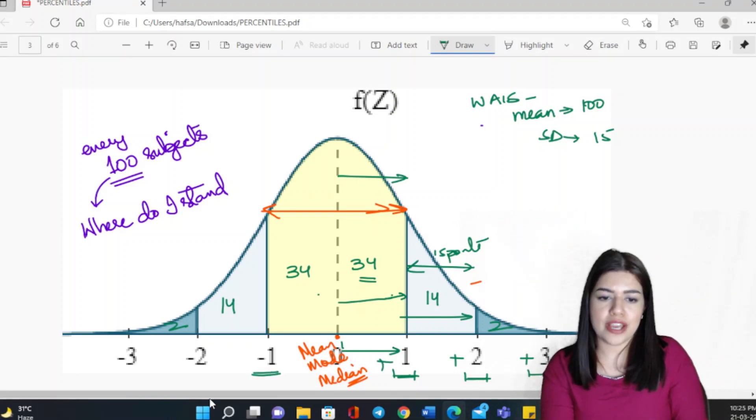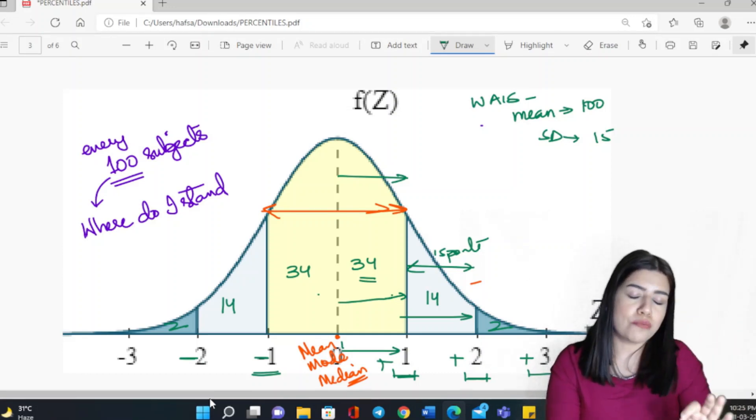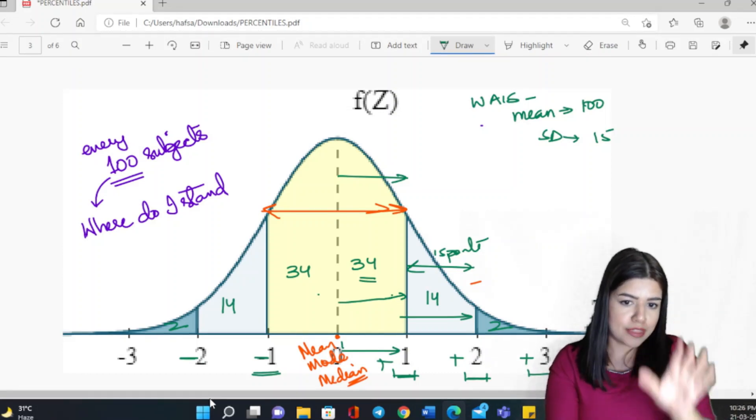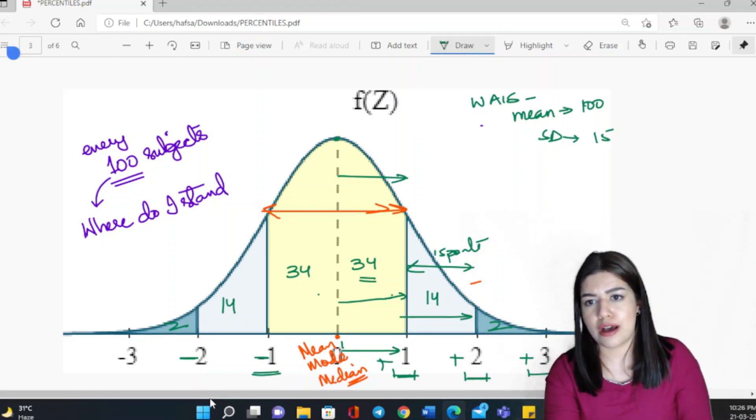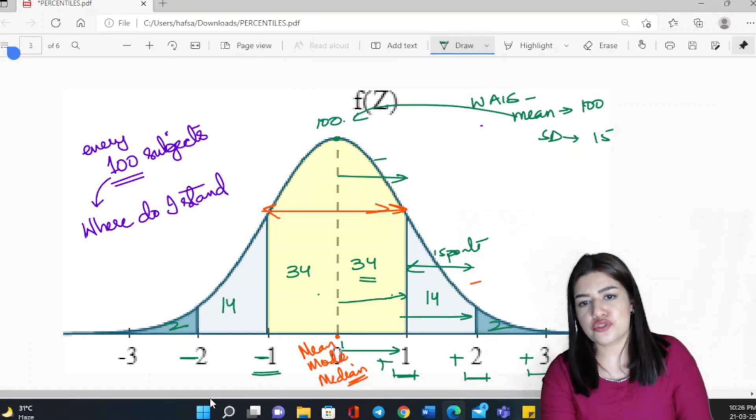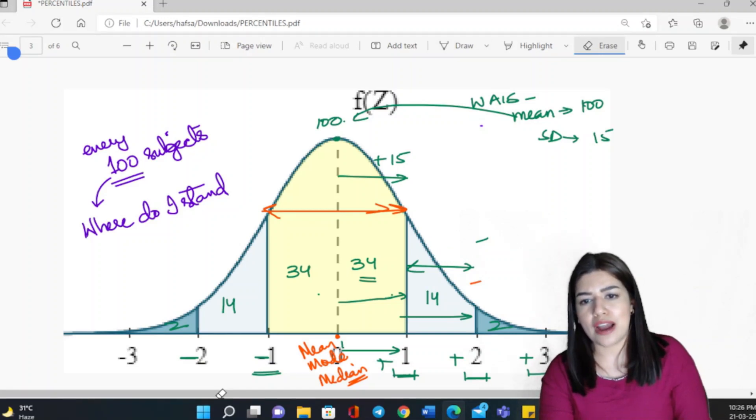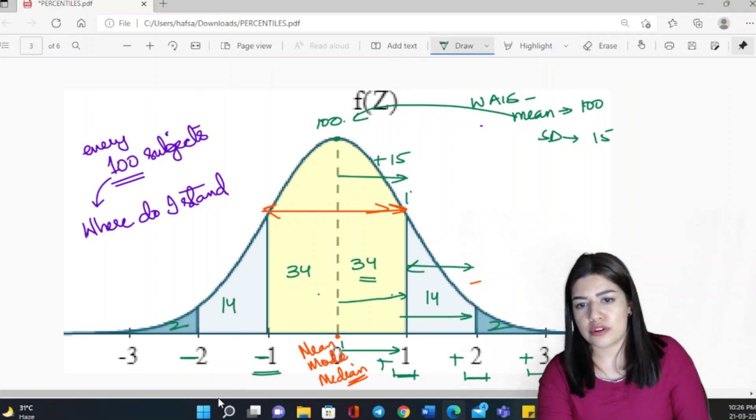The minus sign indicates that these scores are below the mean. They are below the norm, they are below the average, because after all our mean is our average, and our mean here is 100. And I just go on adding 15, 15, 15, 15 at each standard deviation. Now all I have to do is keep adding 15 points at each standard deviation, which will give me a score of 115 here, will give me a score of 130 here, and will give me a score of 145 here.